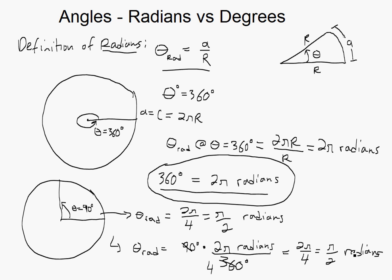Radians is used a lot in math because the circumference is 2πR, and it's much easier than having 360 — well, you'll see it later on.